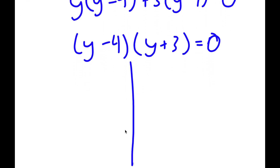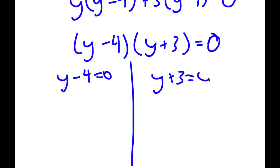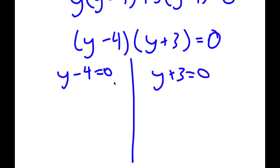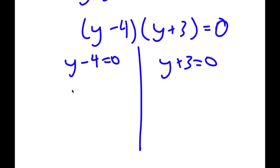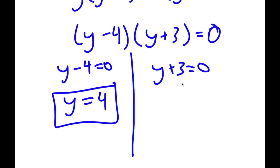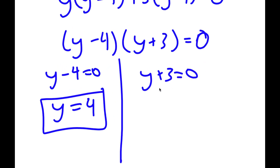This gives me two equations: y minus 4 is equal to 0, and y plus 3 is equal to 0. For y minus 4 equals 0, I get y is equal to 4. And for y plus 3 equals 0, I get y is equal to negative 3.